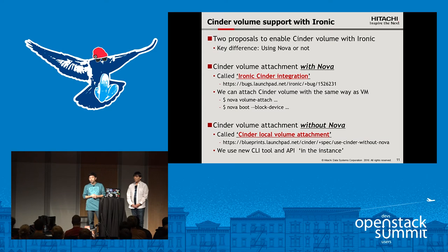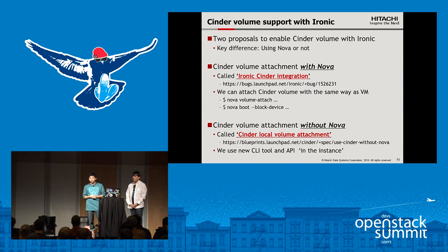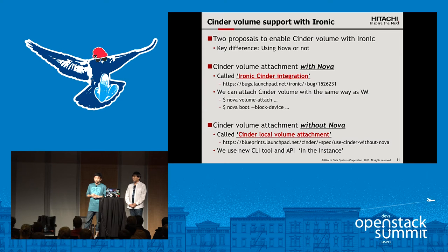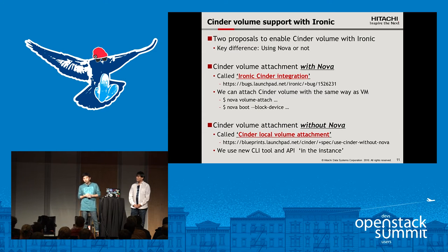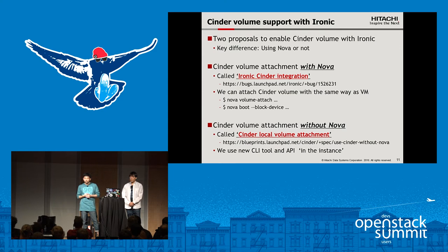The key difference between those two proposals is using Nova or not. The first one is Cinder volume attachment with Nova — this is called Ironic-Cinder integration. We can attach Cinder volume in the same way as with a VM, using Nova volume-attach command, or boot from volume using Nova boot with block device option. The second one is Cinder volume attachment without Nova, called Cinder local volume attachment. To use this feature, we need to use a new CLI tool and API inside the instance.